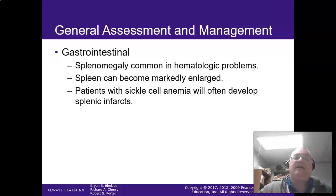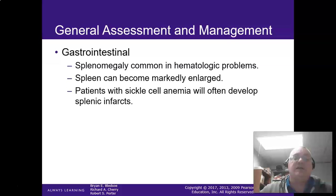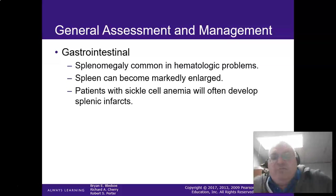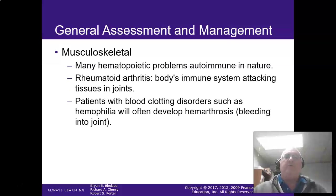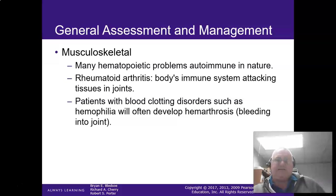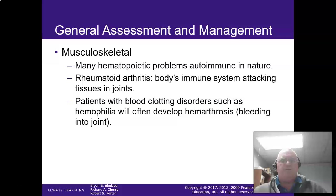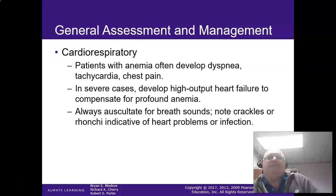Splenomegaly: usually the body tries to compensate by making more red blood cells, and it destroys more in the spleen. The spleen works harder — just like any other organ, if it works harder, it's going to enlarge and get bigger. Patients with sickle cell often develop a splenic infarct, so they're going to get a lot of abdominal pain. Because of where the spleen is — upper left quadrant, close to the lower left thorax — be thinking spleen with pain in that region. Rheumatoid arthritis is your body attacking the joints, causing swelling and immobility. It can also hurt more when you've got a sickle cell crisis going on.